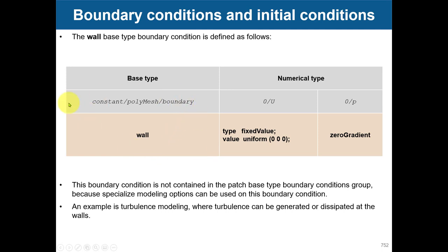Then you have the wall base type — these are for walls. This is important: for turbulence models, you are only going to compute Y-plus if you define the face as a wall. If you define it as a patch or anything else, you are not going to compute Y-plus or use wall functions there. So you put it as a wall, and then the numerical type in U and P is set accordingly.